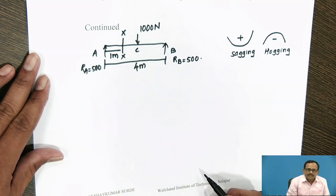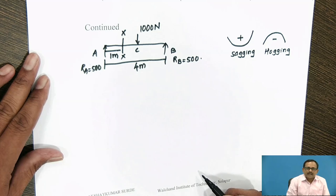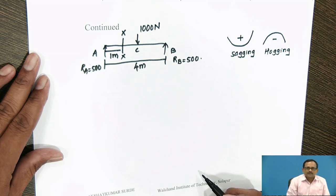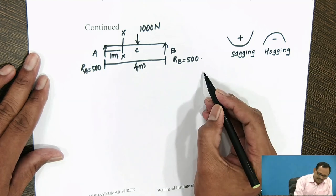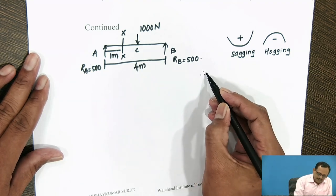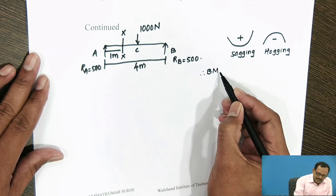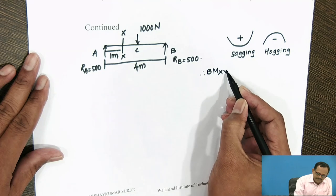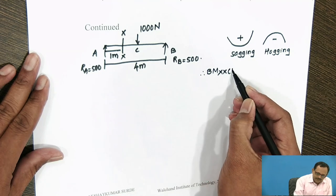Bending moment is the algebraic sum of the moments due to the reactions and forces acting to the left side of the section or to the right side of the section. Hence, the bending moment at section XX to its left side: